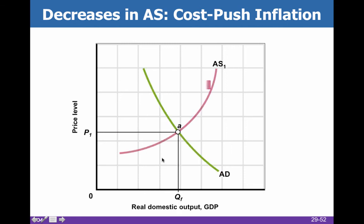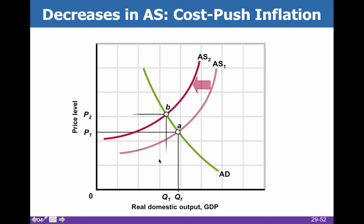When we have cost-push inflation, costs of production go up because of something — some sort of supply shock pushes aggregate supply to the left. In this situation, we go from price level P1 to price level P2, and our quantity falls from QF down to Q1.